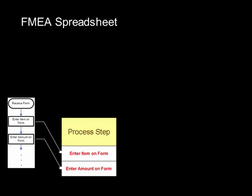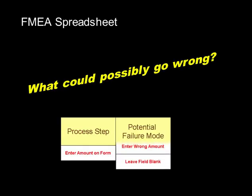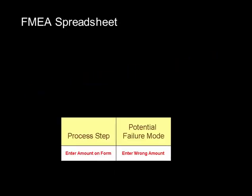So we enter the item on the form, we enter the amount on the form. From there we're going to take a look at what could possibly go wrong. Each of these steps could potentially fail in multiple ways, so we ask the question: what could possibly go wrong? For each step we think through what might go wrong. We're entering the amount on the form — we might enter the wrong amount, or we might leave the field blank.